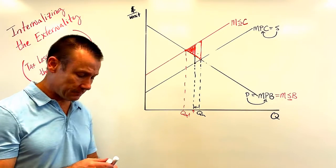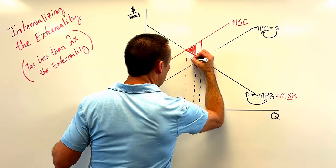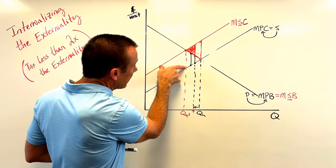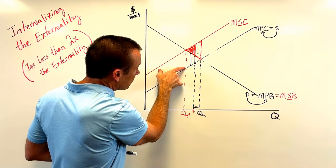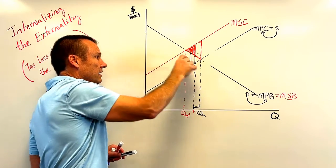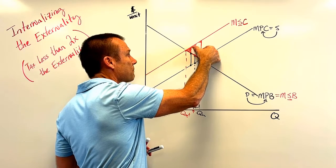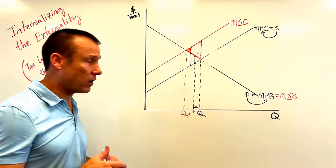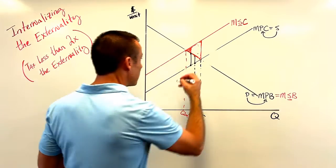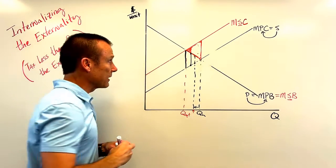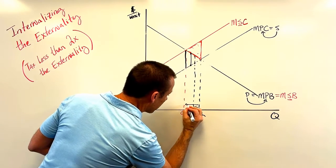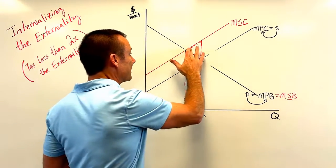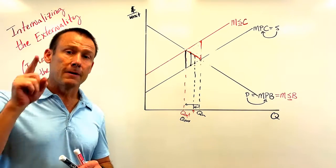Now we make the tax a little bit bigger — still not the size of the per unit externality. The size of the per unit externality is the vertical distance between the PC and SC — between the marginal private cost and the marginal social cost. Our tax still isn't big enough, but it takes care of a lot more deadweight loss. The optimal tax would bring the quantity all the way back to Q-opt, equal to Q-tax. That would be a per unit tax equal to the size of the per unit externality, resulting in absolutely zero deadweight loss and maximizing social surplus.